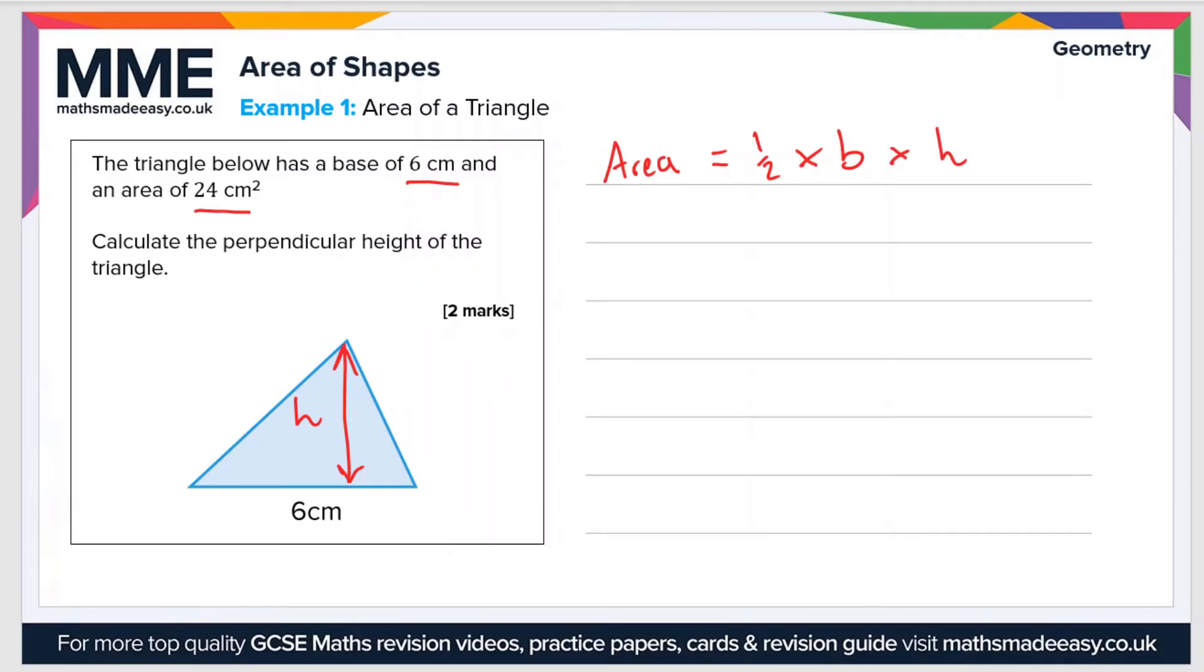Now we want to get h and we have everything else, so let's plug everything else in first. We have the area, which is 24 centimeters squared, equals a half times the base, which is 6, times h. Now let's rearrange and solve this equation for h. We have this half here, so to remove that, we'll multiply everything by 2. So we have 48 equals 6 times h, and therefore h equals 48 divided by 6, which equals 8 centimeters.